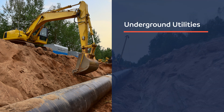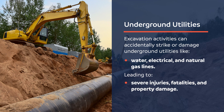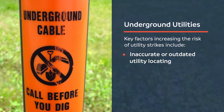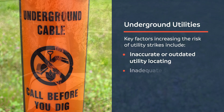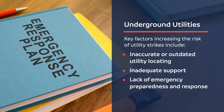Underground Utilities: Excavation activities can accidentally strike or damage underground utilities like water, electrical, and natural gas lines, leading to severe injuries, fatalities, and property damage. Key risk factors include inaccurate or outdated utility locating before excavation, and inadequate support when excavating near utilities, which can lead to collapse or disruption. It is important to develop and communicate an emergency action plan that includes procedures for responding to utility strikes, such as contacting utility providers and evacuating workers.